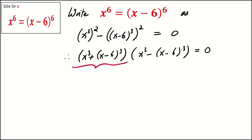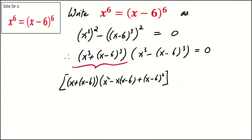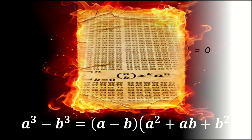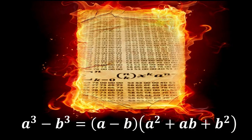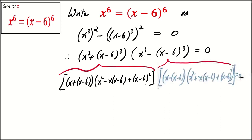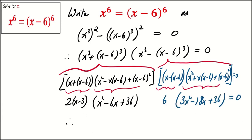The first factor is of the form a cubed plus b cubed. Using the formula a cubed plus b cubed equals (a plus b)(a squared minus ab plus b squared), we expand accordingly. The second factor is of the form a cubed minus b cubed. Using the formula a cubed minus b cubed equals (a minus b)(a squared plus ab plus b squared), we get the following. Finally, we have (x minus 3)(x squared minus 6x plus 36)(x squared minus 6x plus 12) equals 0.